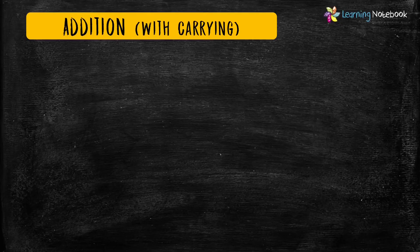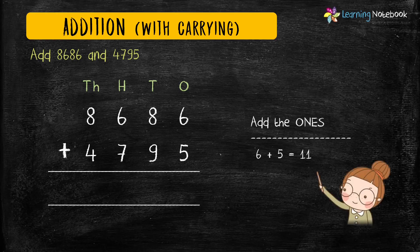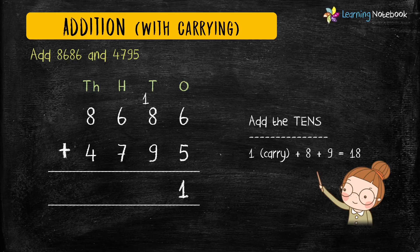Let's see one more example: add 8686 and 4795. First write these numbers in columns. Add the digits at ones place: 6 plus 5 equals 11. So carry 1 to the tens place and 1 comes in the answer. Next add the digits at tens place: 1 carry plus 8 plus 9 equals 18. So carry 1 to the hundreds place and 8 comes in the answer.